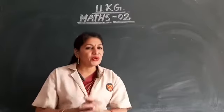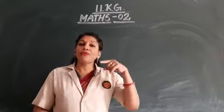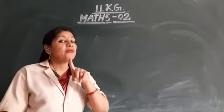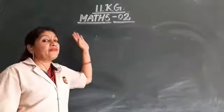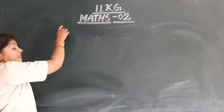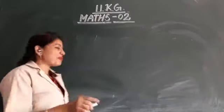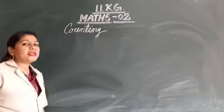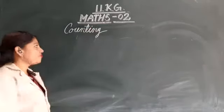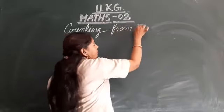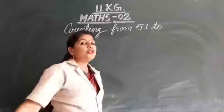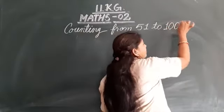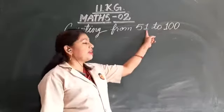From 0 to 50. Today we will start from 51 to 100. First we will write the heading: Counting, C-O-U-N-T-I-N-G. Counting from 51 to 100. Today we will write the numbers 51 to 100.